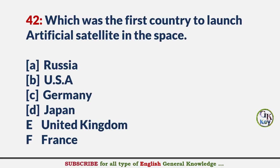Which was the first country to launch an artificial satellite into space? Answer A: Russia.